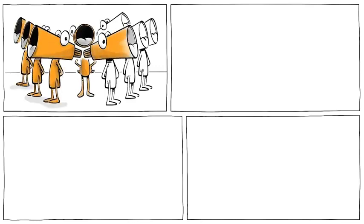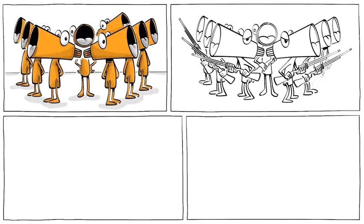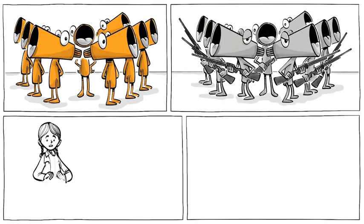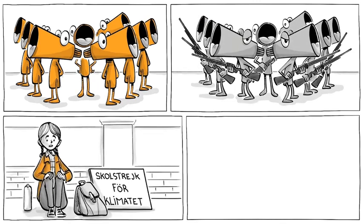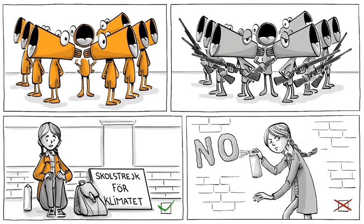Freedom of assembly also has its limits. Gatherings must take place peacefully and must not jeopardize public safety, which can happen if people bring arms or riot and become violent. So, Greta is allowed to sit in front of the parliament with posters, but she is not allowed to smear the building with slogans.